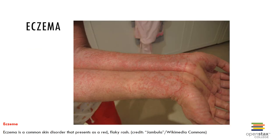Eczema is a type of skin disorder which is an allergic reaction that manifests as dry, itchy patches of the skin resembling rashes. It can be accompanied by swelling, flaking, and in severe cases bleeding. Many people with eczema have antibodies against dust mites in their blood, but that link has not been proven yet. Symptoms are usually managed with moisturizers, corticosteroid creams, and immunosuppressants.